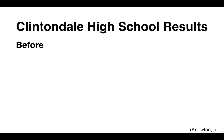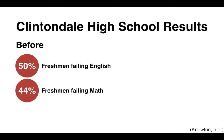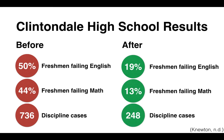A high school that decided to go completely flipped — Glendale High School — before they decided to flip their classes, they had 50% of freshmen failing English, 44% of freshmen failing math, and a total of 736 discipline cases. After implementing this model, they had 19% of freshmen failing English, 13% of freshmen failing math, and only 248 discipline cases — a dramatic decrease in all categories.